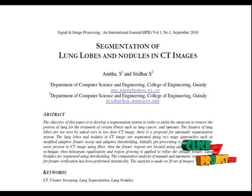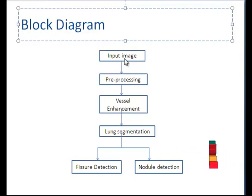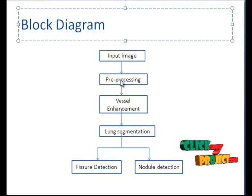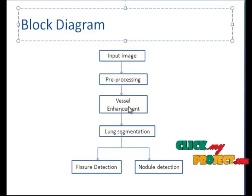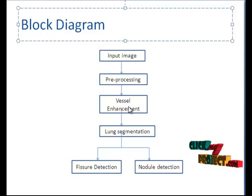Through this project, we have developed a segmentation algorithm for identifying the fissures and nodules from CT images. This is the flow of our project. The input CT lung image goes to the pre-processing stage, where we remove noise using the VNR filter. After the noise-free image, we perform vessel enhancement using morphological operations like top hat and bottom hat.